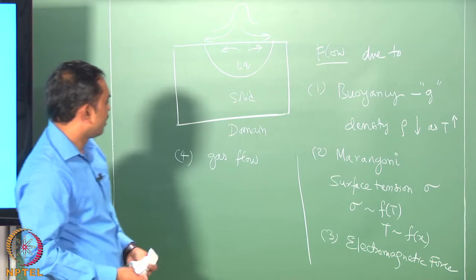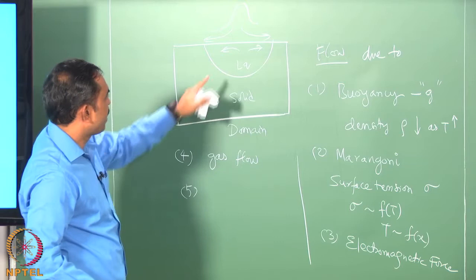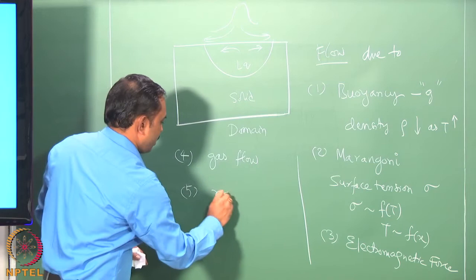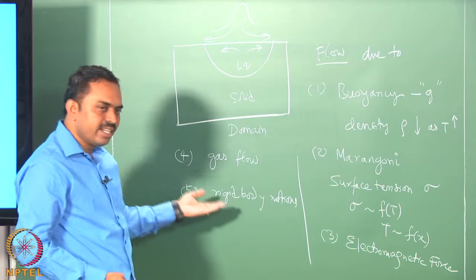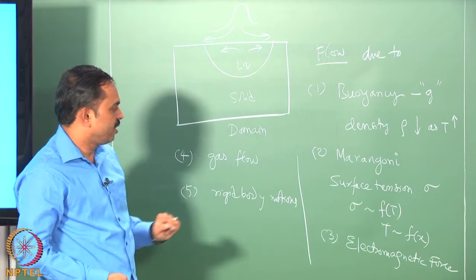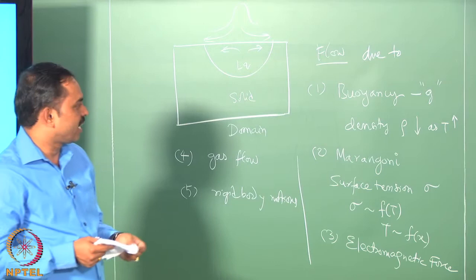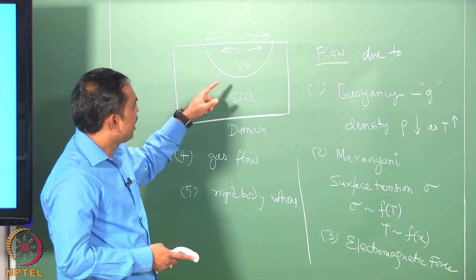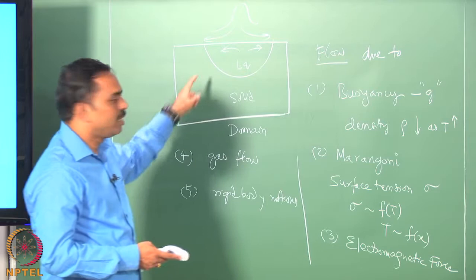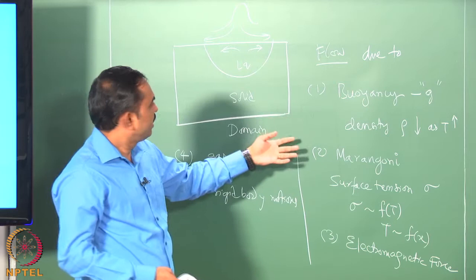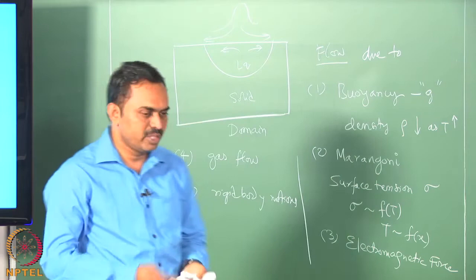There are also minor other reasons that play a role. For example, gas flow: on top of the weld pool you have the gas shroud going in a certain direction, and while moving it exerts stress on the surface of the melt pool, causing it to move as well. You could also think of rigid body motions given to the work piece itself — very often that is not done in normal welding setups, but if it is, that would also cause the liquid to be convected.